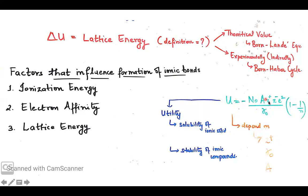Higher charge means higher lattice energy. The importance of lattice energy is that high lattice energy means the compound is highly stable, giving an indication about the stability of the ionic compound. Another utility is that it gives an indication about the solubility of the ionic solid — if the lattice energy is very high, those ionic solids would be less soluble in solvents like water or other solvents with high dielectric constant.